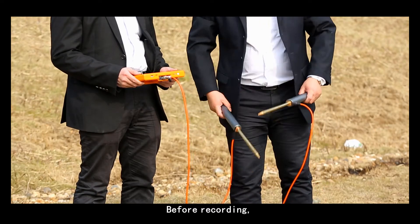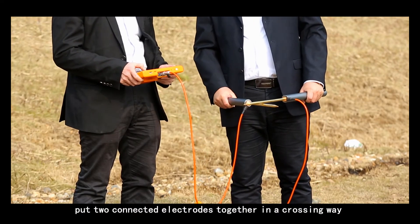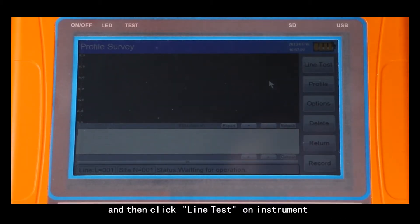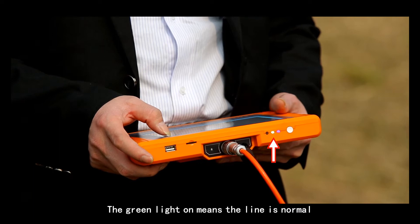Before recording, put two connected electrodes together in a crossing way and then click line test on instrument. The green line on means the line is normal.